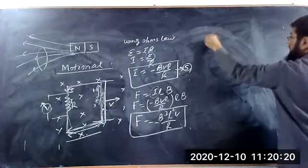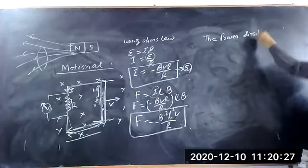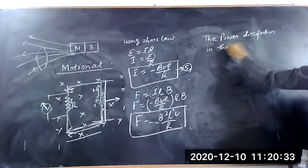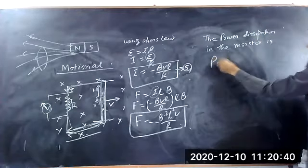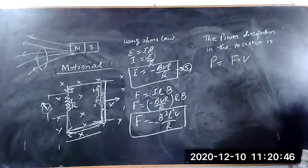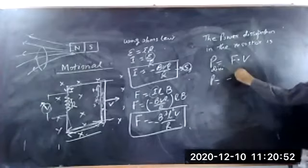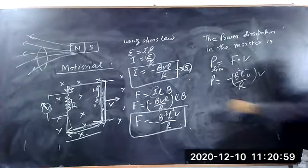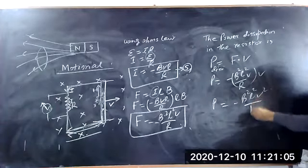The power dissipation is P is equal to force into velocity. So the power is equal to: force is equal to minus B squared L squared upon R, multiplied by V. So the power is equal to minus B squared L squared V squared upon R.